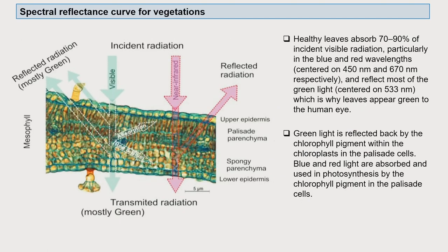For relatively healthy vegetation, plants absorb almost 70 to 90 percent of the incident visible radiation, particularly in the blue and red wavelengths. They reflect most of the green light, which is why plant leaves appear green to the human eye. Green light is reflected back by the chlorophyll pigment within the chloroplast, while blue and red light are absorbed for photosynthesis by chlorophyll in the palisade cells.